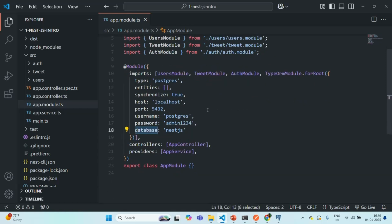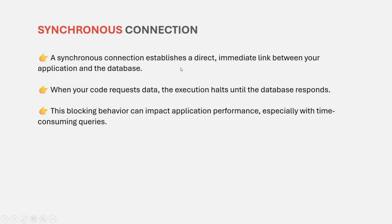But this connection here is a synchronous connection. A synchronous connection establishes a direct, immediate link between your application and the database. When your code is requesting some data from the database, the execution halts until the database responds. For example, if you are requesting the user details from the database and this query is going to take some time, for that time period no other code will be executed in your NestJS application.